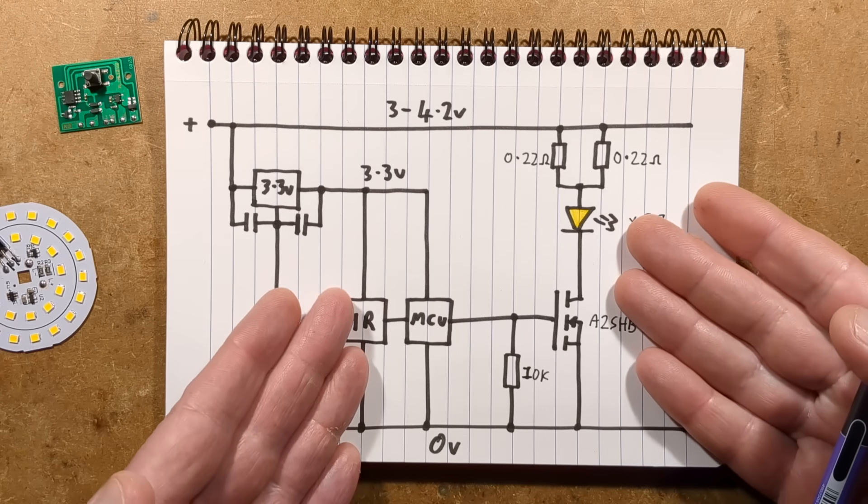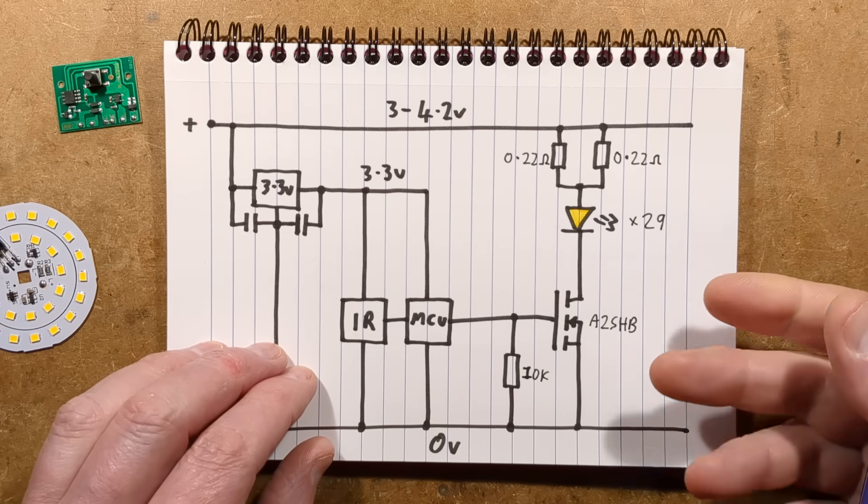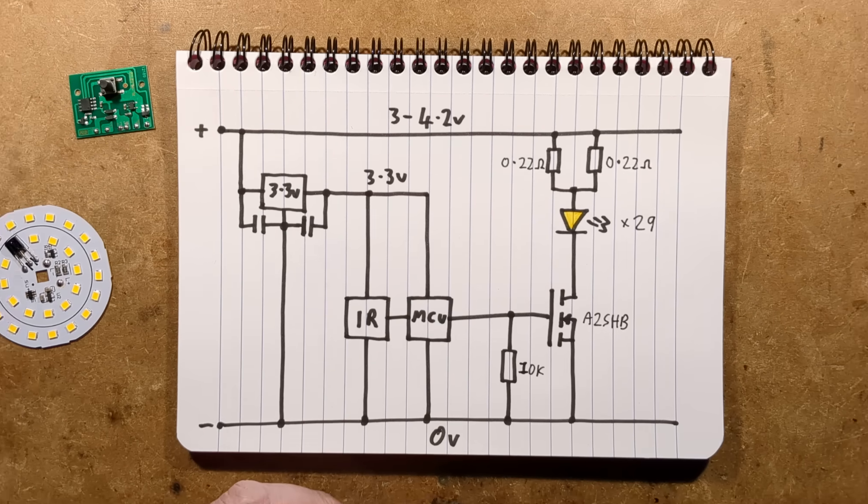so when it comes on initially, it will be at 50% intensity, and then the remote control can be used to switch it high, low, or off, and that is more or less it.